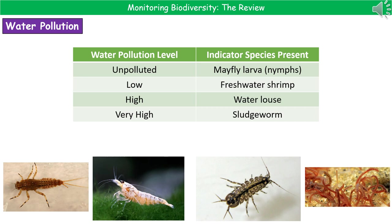So if we get a sample of water and find lots of mayfly larvae and a few freshwater shrimp, we can say that is very unpolluted water. Whereas if we get a sample filled with sludge worms, we know we've got a pollution problem in that area.